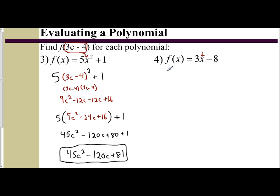So we have 3 times x. So I'm going to put in times (3c - 4) minus 8. And then just distribute and combine like terms. You get 9c minus 12 minus 8. Then -12 and -8 give you -20. And so you get 9c minus 20.